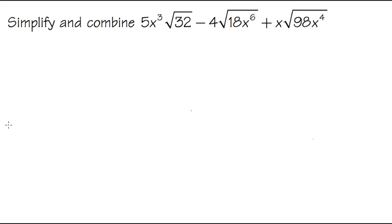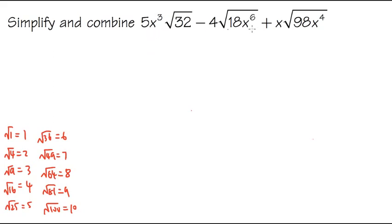We are going to look at some of the perfect square numbers that we know first. These are the perfect square numbers. Let's take a look at square root 32 first. We are going to ask ourselves which of these numbers goes into 32.